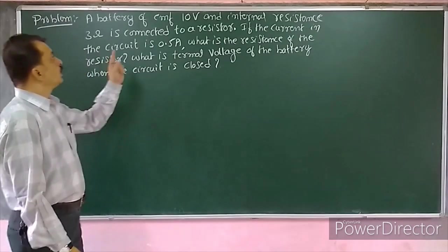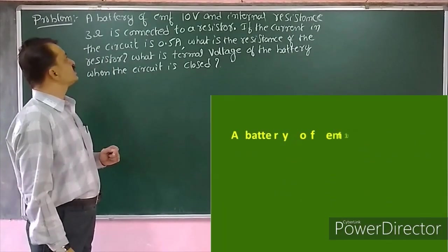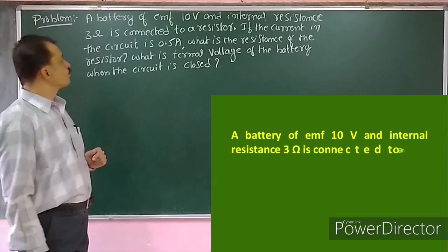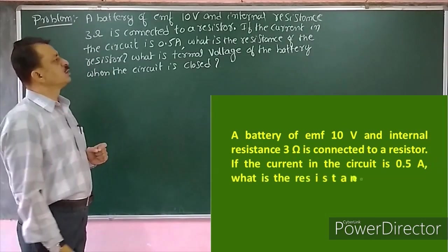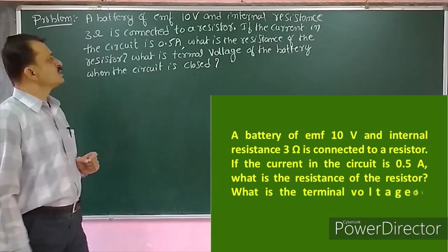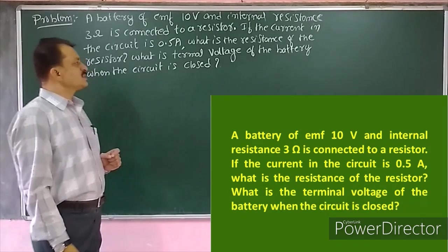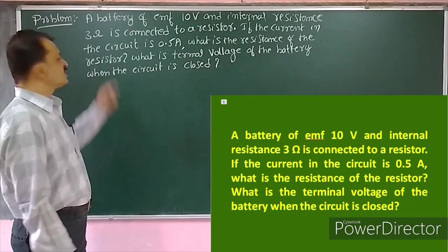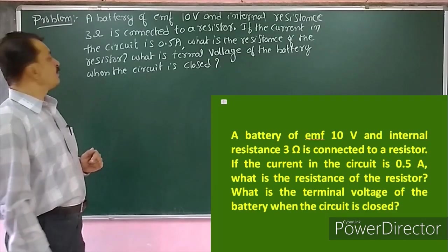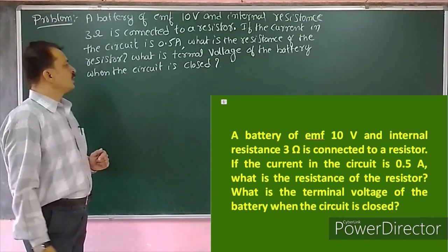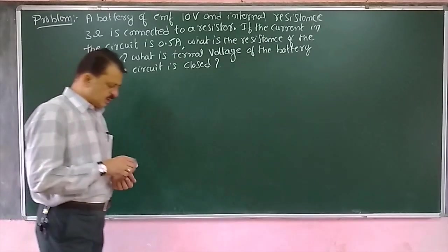Next problem: a battery of EMF 10 volts and internal resistance 3 ohms is connected to a resistor. If the current in the circuit is 0.5 amps, what is the resistance of the resistor? What is the terminal voltage of the battery when the circuit is closed?